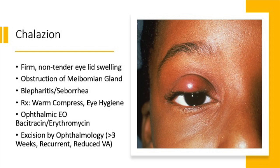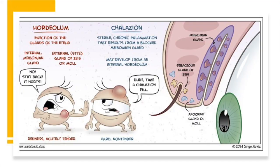For chalazion, recommend warm compresses and eye hygiene again. If it is recurrent or causing reduced visual acuity, refer to ophthalmology. You may also prescribe topical antibiotics like erythromycin or bacitracin. There is a short cartoonish representation of hordeolum and chalazion from medcomic.com worth looking up.